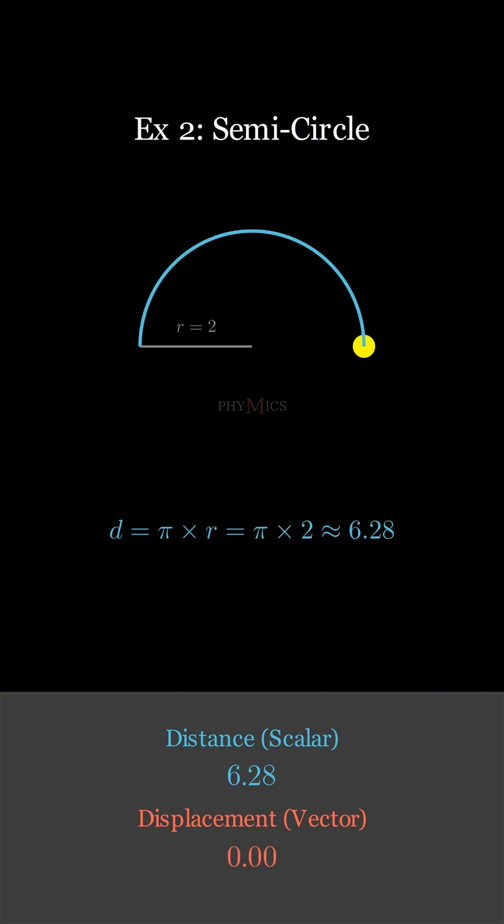However, displacement, being the shortest distance between the initial and final points, is going to be a straight line which is actually the diameter of the semicircle. The diameter of the semicircle is going to be 2r, which is 2 times 2, which gives you 4. So, 4 is the displacement.